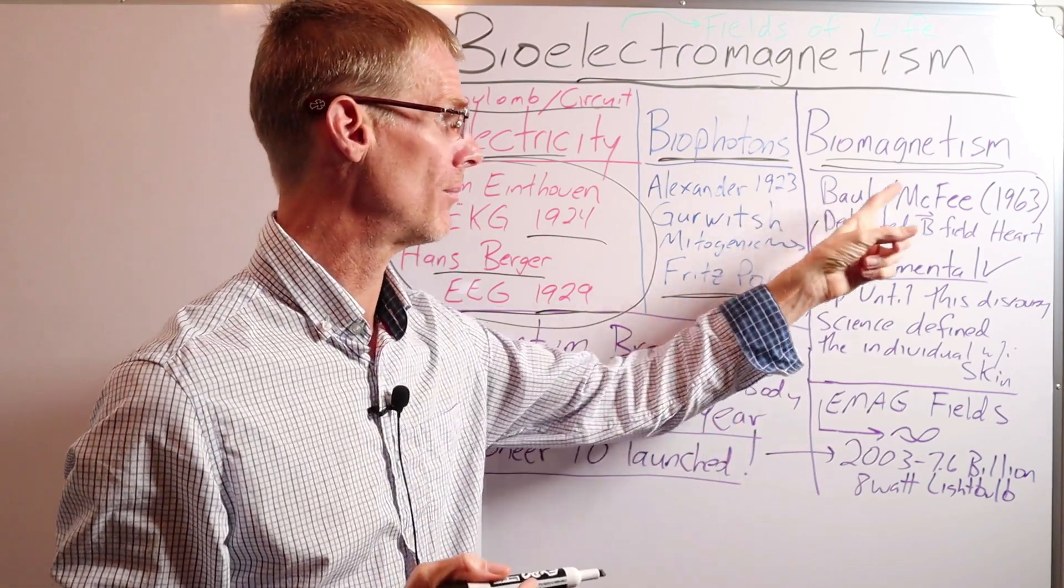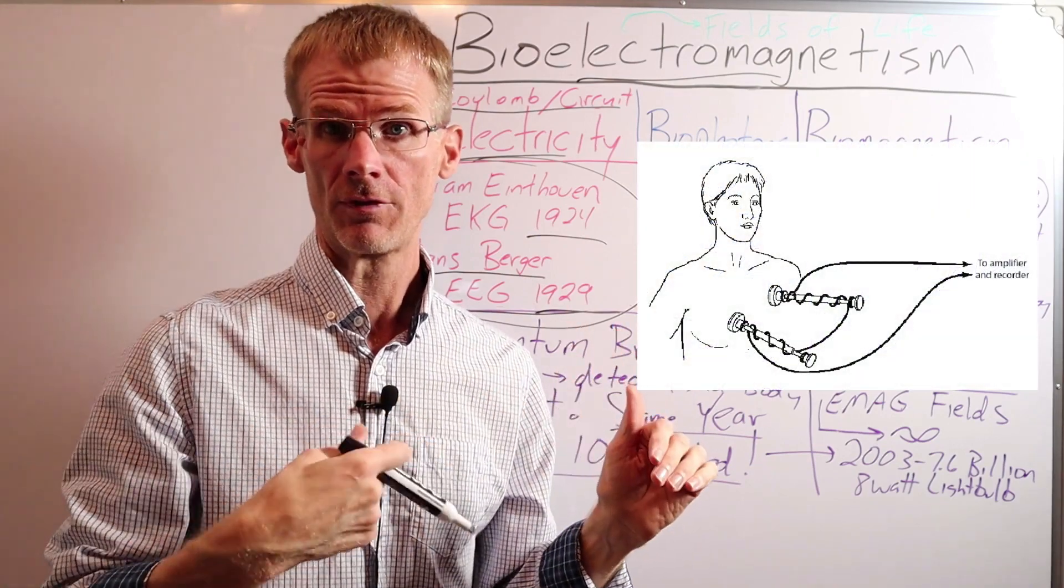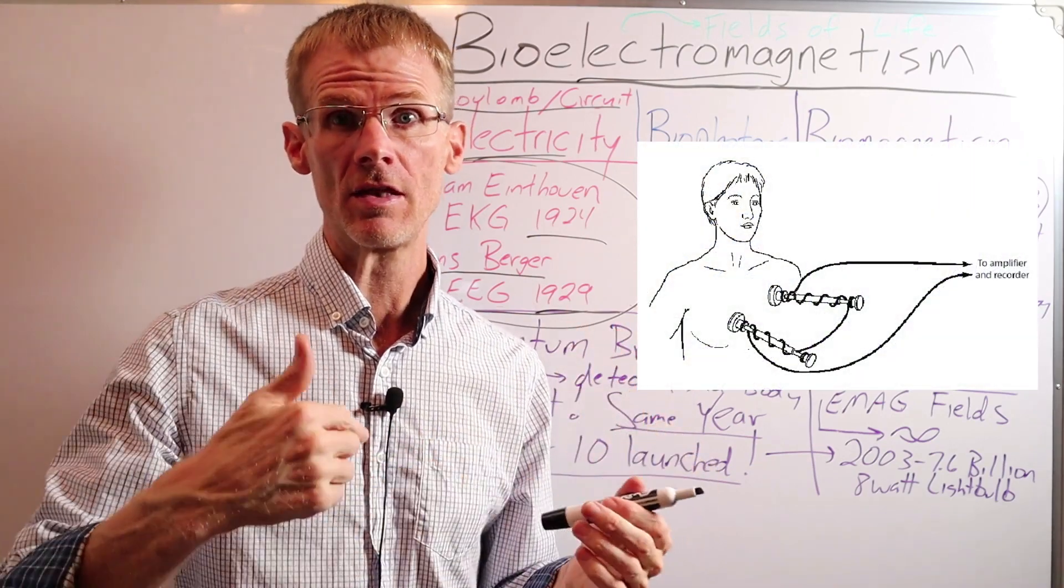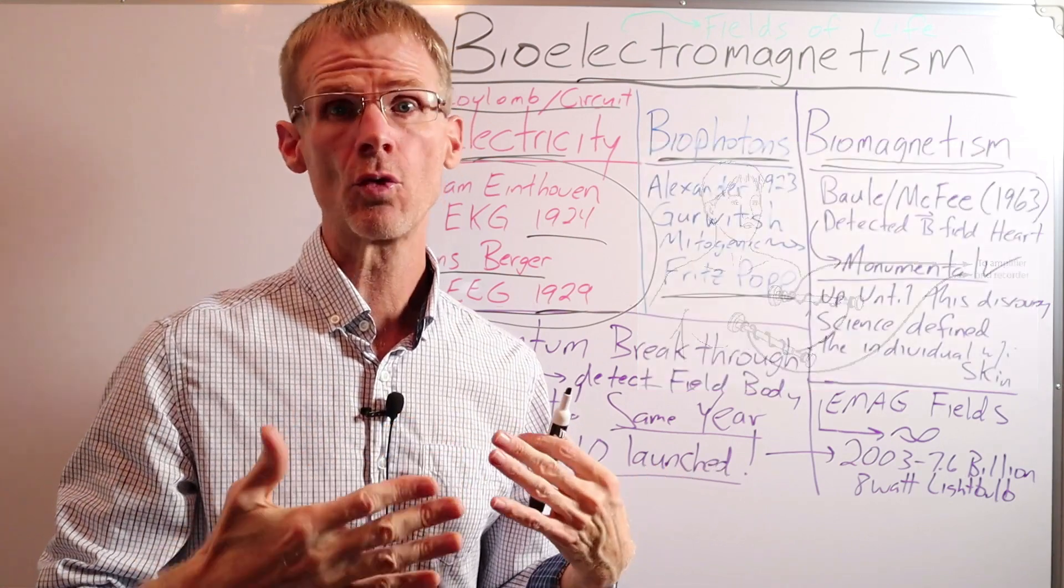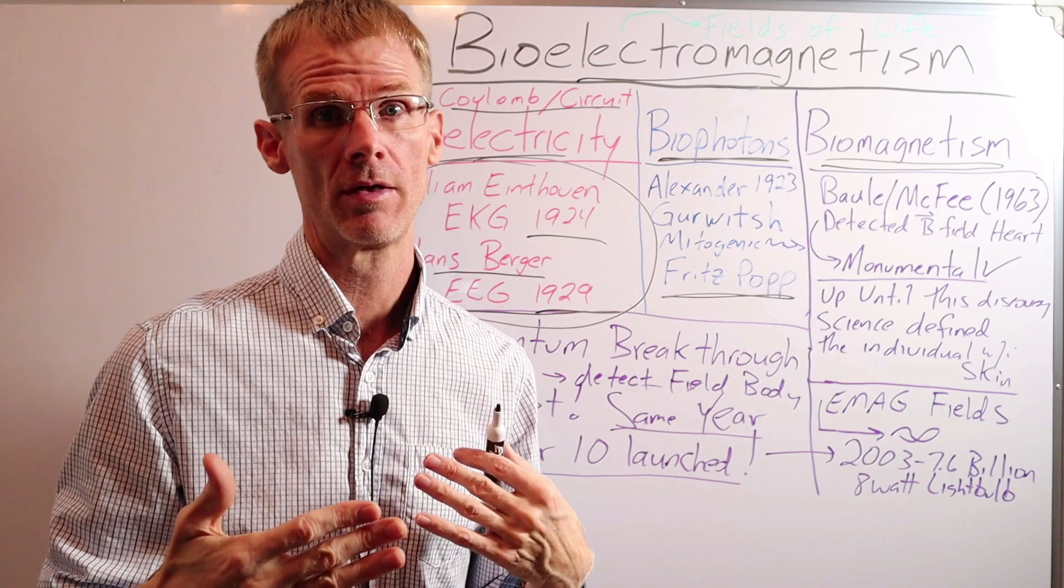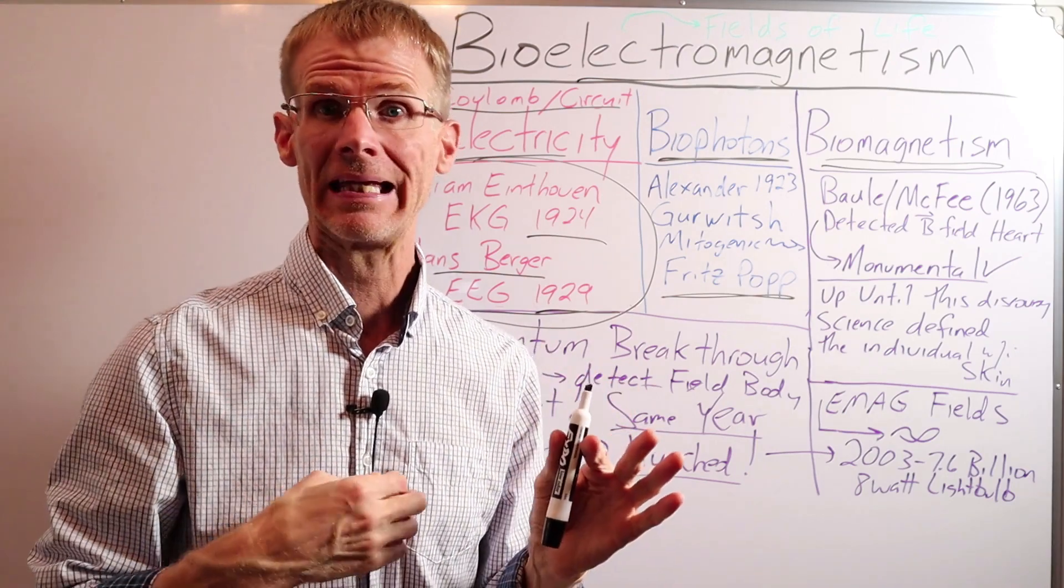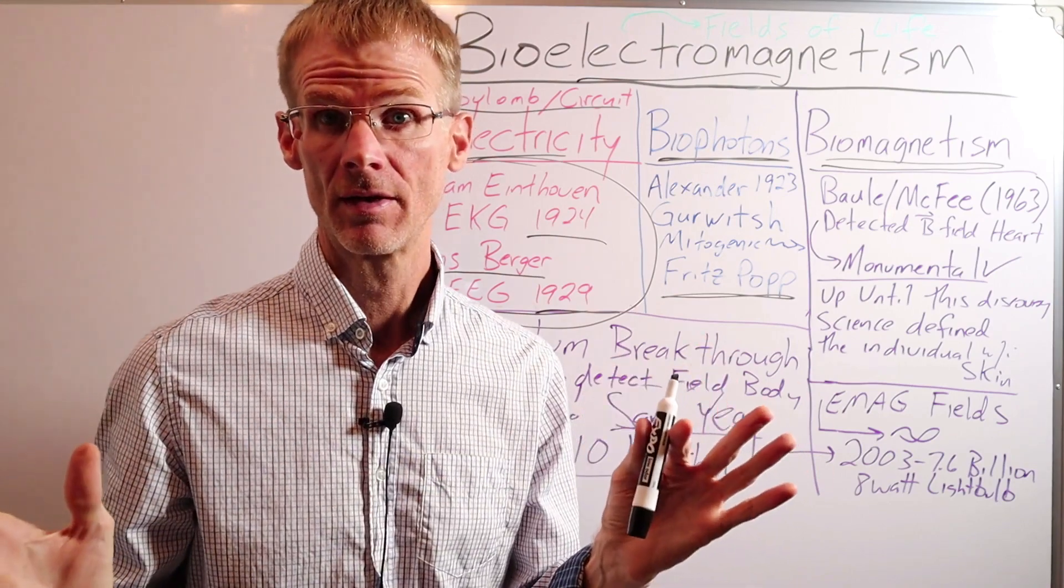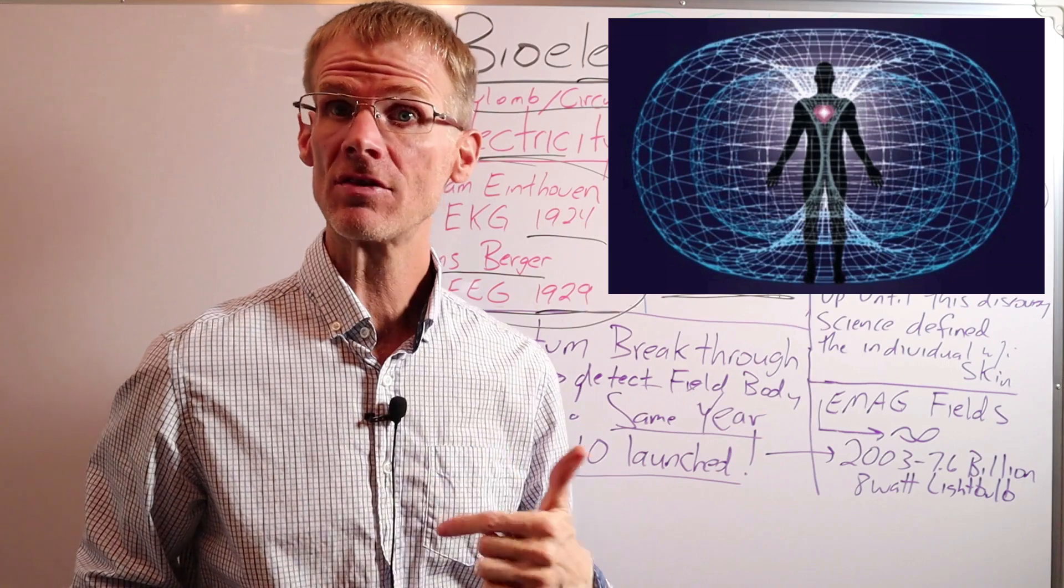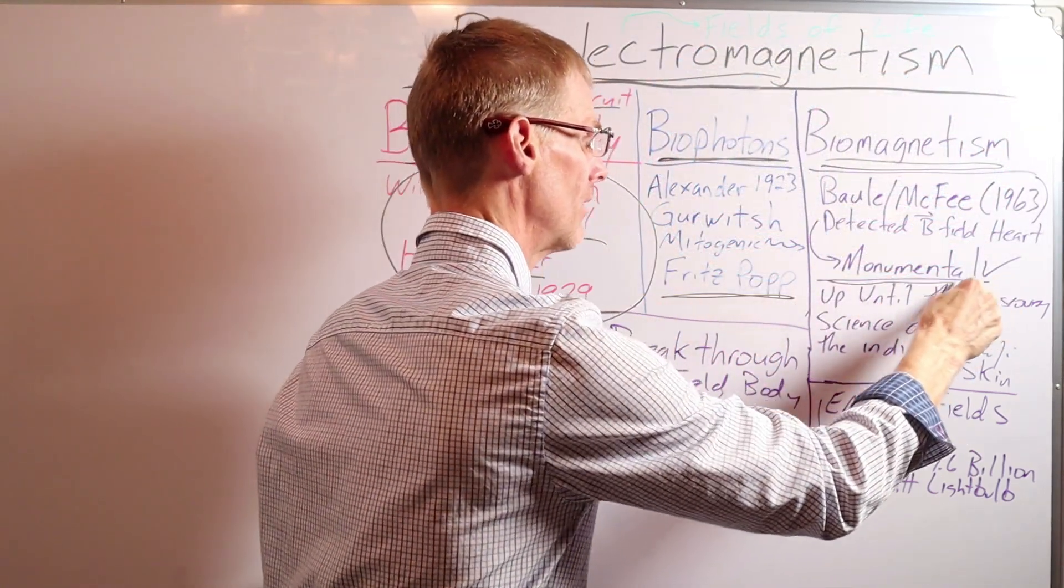So Ball and McPhee in 1963 were the first to detect the magnetic field of the heart. And what they did is they used a million windings over around a ferrous core, which is an incredibly sensitive magnetic field detector. And they put a lot of meticulous labor and work just to detect the heart's magnetic field. But they did it. They detected the magnetic field of the heart outside of the body.